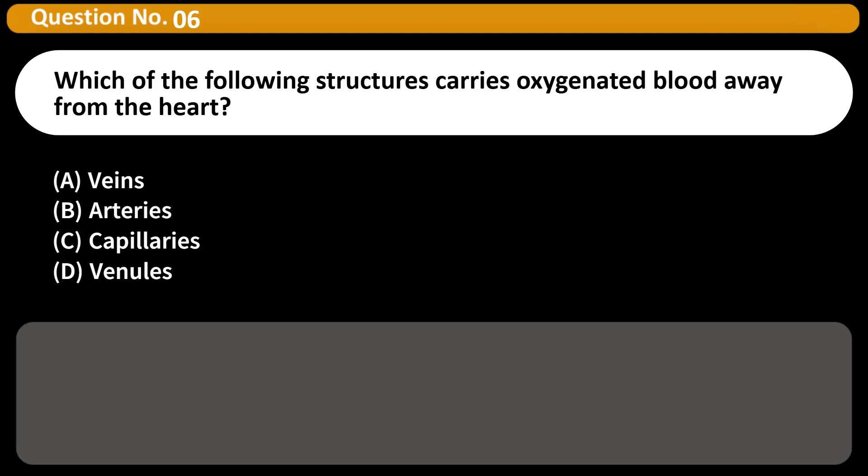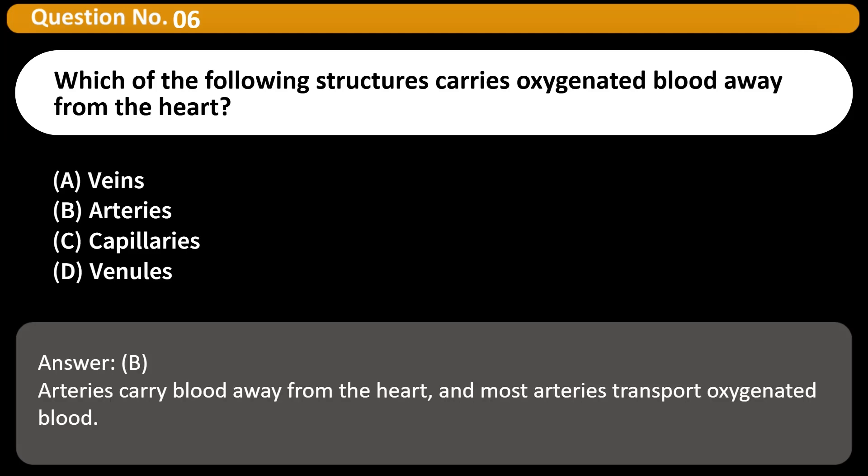Which of the following structures carries oxygenated blood away from the heart? A) Veins, B) Arteries, C) Capillaries, D) Venules. Answer: B. Arteries carry blood away from the heart, and most arteries transport oxygenated blood.